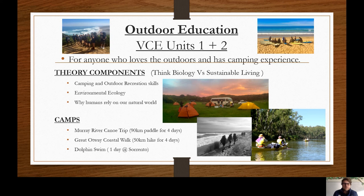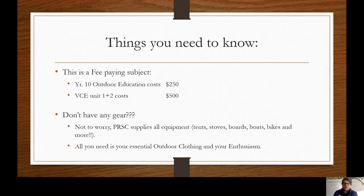We do go on a few camps. We go to the Murray River for a few days for a canoe trip. We go to the Great Otway Coastal Walk for a few days for a bush hike and also try to get a couple of day trips in there as well, which ties in the information we're learning within the classroom. Things you need to know is that this is a fee-paying subject. At VCE level, the cost is around $500, and that is a discussion you need to have with your parents. That $500 goes towards your trip costs, so you don't have to pay anything extra when you go away on the trips. In Year 11, you are away on trip for roughly 10 days of the year.